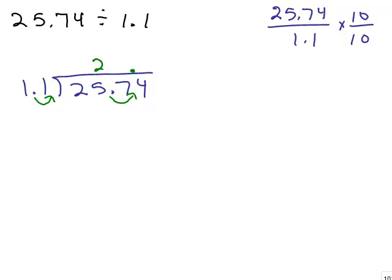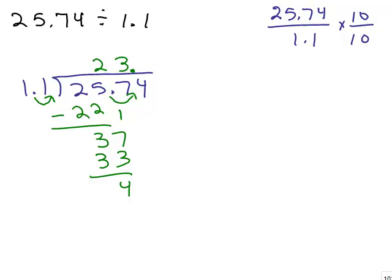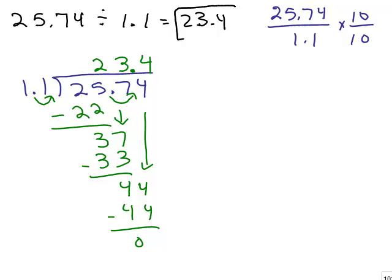So let's do this quickly again using the shortcut. 11 into 25 goes 2. 11 into 37 goes 3. Bring that down, bring down the 4, and you get the same exact answer: 23.4. The reason you can just move the decimal 1 to the right is because you're multiplying numerator and denominator by 10 to get a whole number divisor. That's the shortcut, especially if the problem is already given in that form.